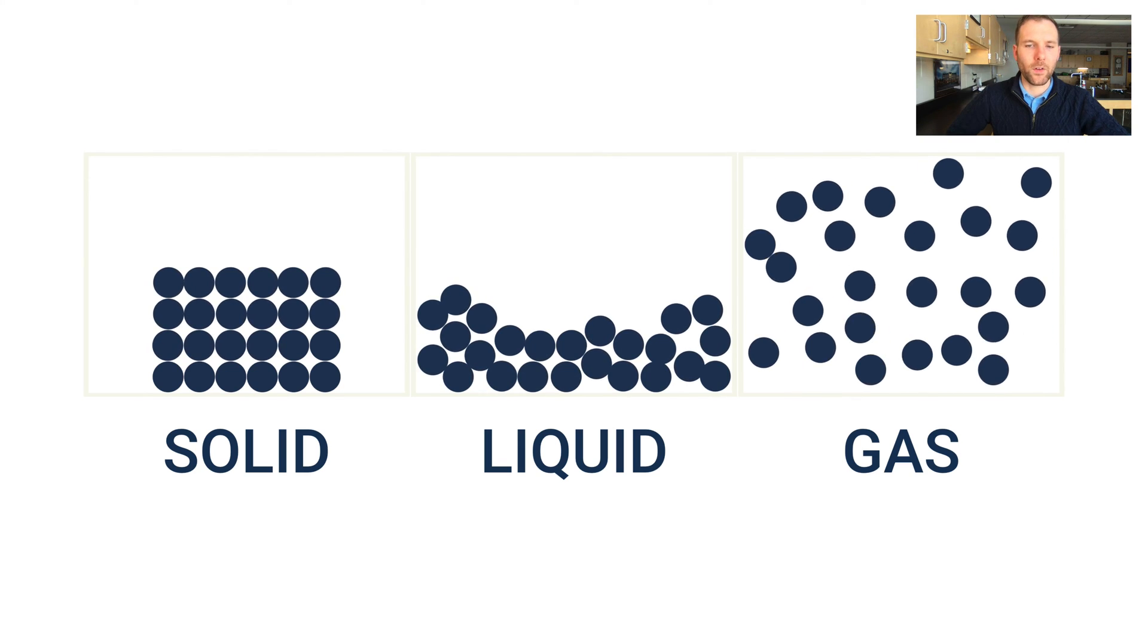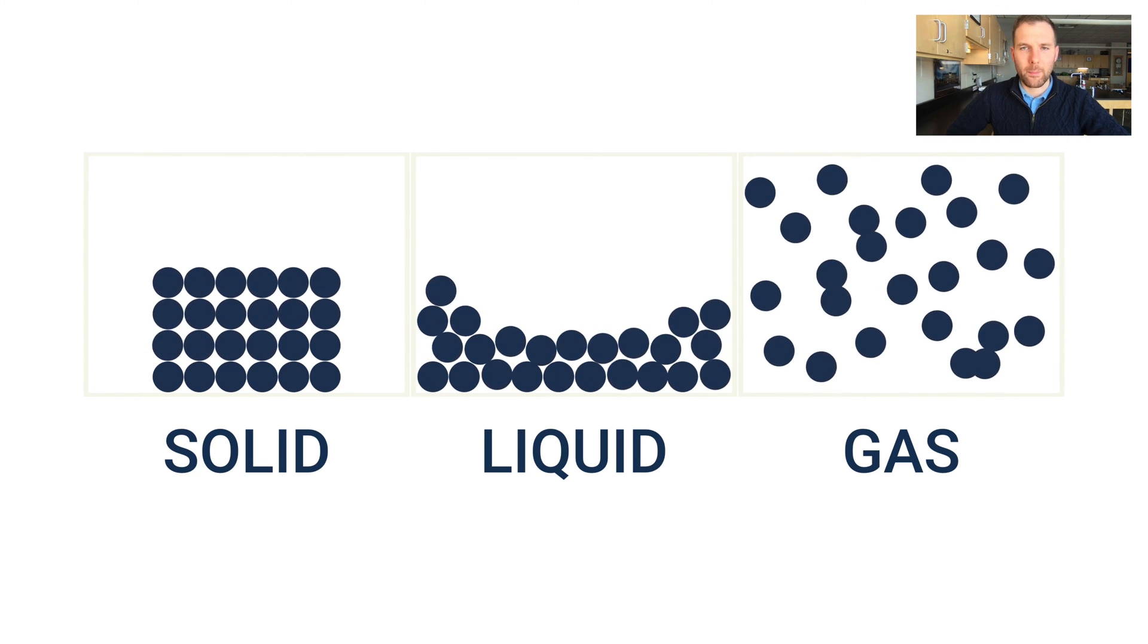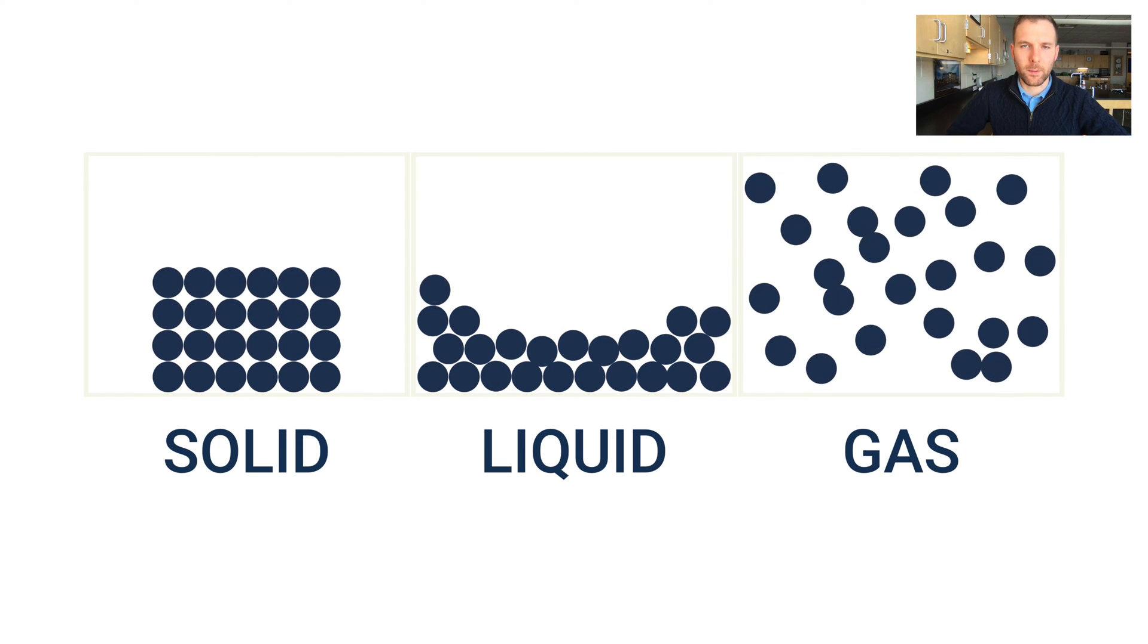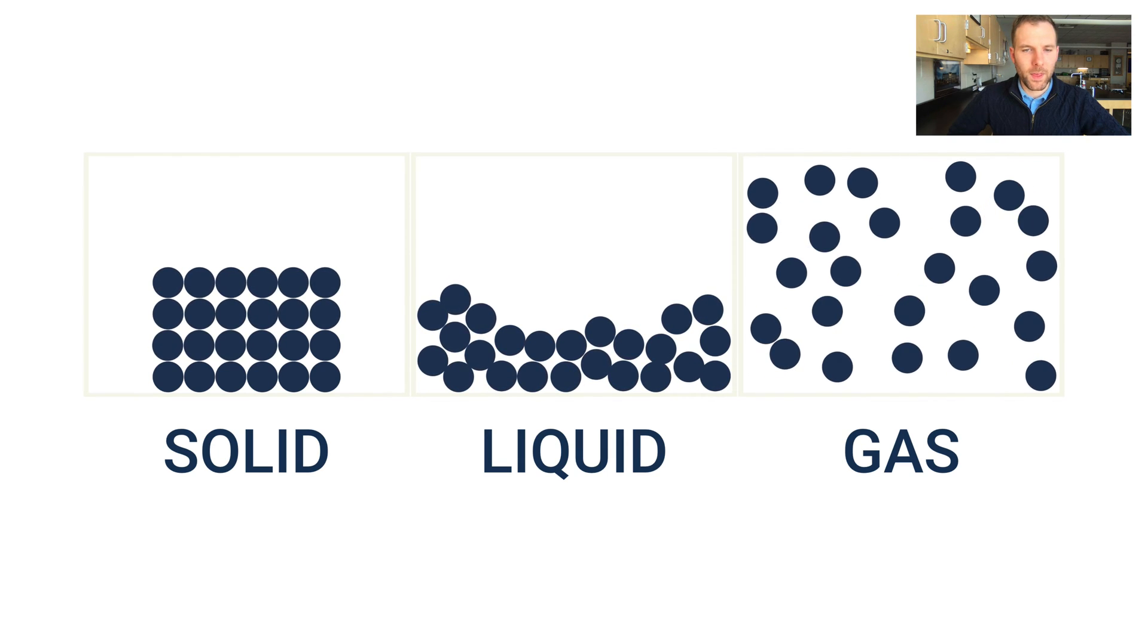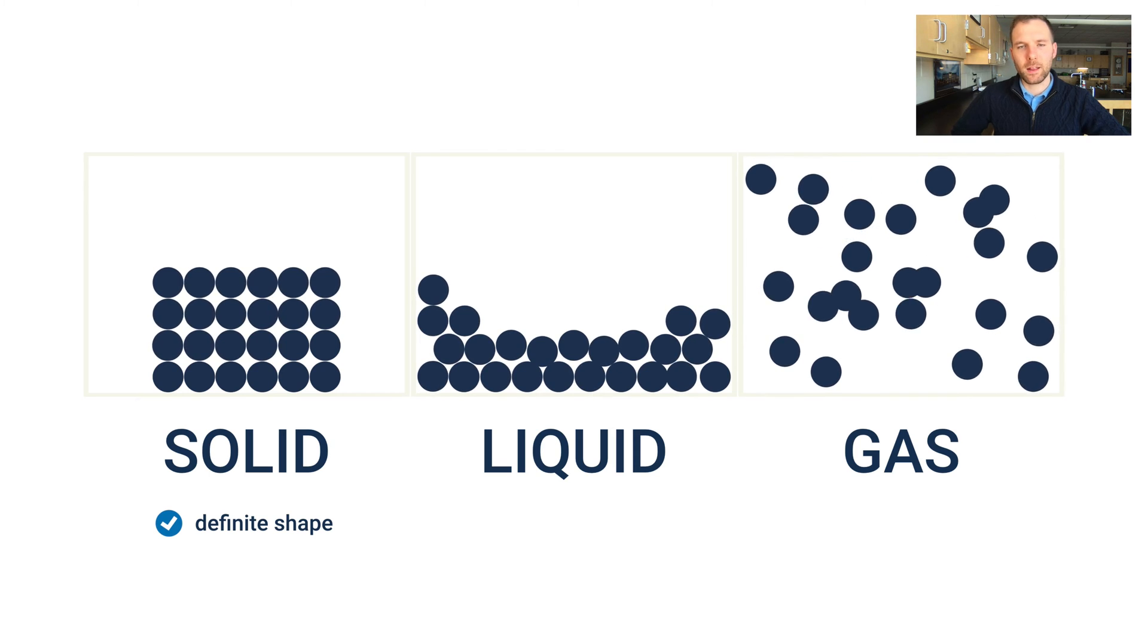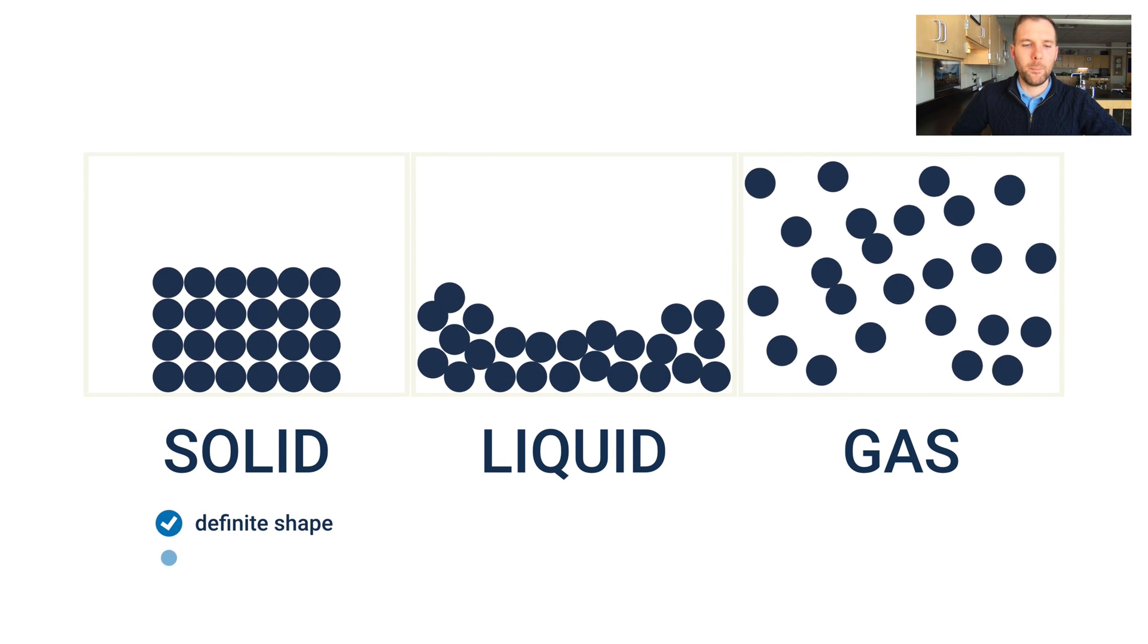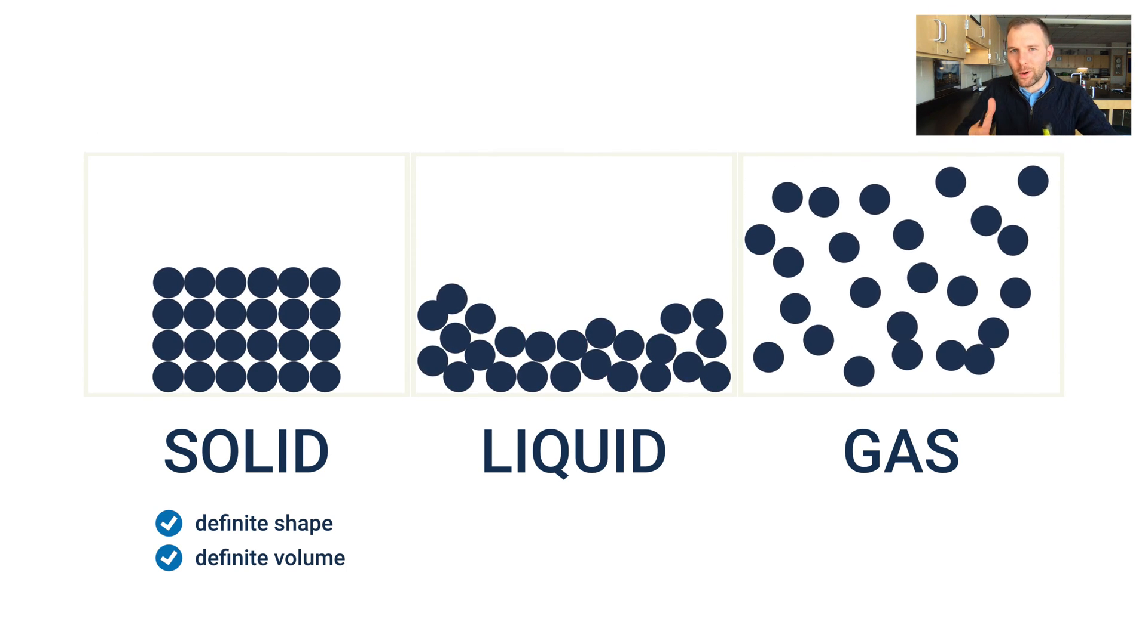That's what's going on in a solid. If all of that motion was to stop, we'd be at absolute zero for a temperature, which would be zero Kelvins, negative 273 Celsius. But that's what's going on as a solid. Solids have a definite shape, meaning they keep their shape, and they also have a definite volume. This is something that's going to stay really essentially whatever it is. It's going to stay in that shape and in that size.